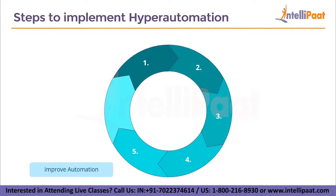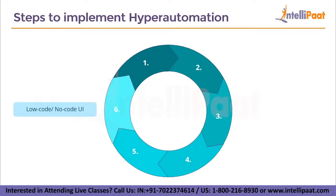The fifth step is to improve automation. Organizations should look at already existing automated tasks and find out if or how they can be improved and included in the overall hyperautomation process. The final important step is to ensure that the digital twin or hyperautomation stack is user-friendly and contains a low-code or no-code user interface, so employees using it can come from a non-technical background as well.